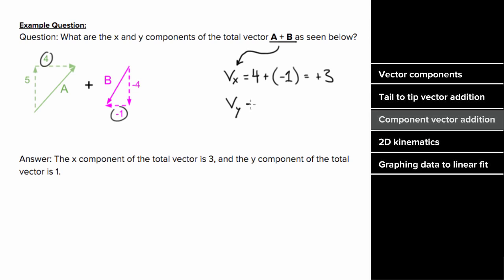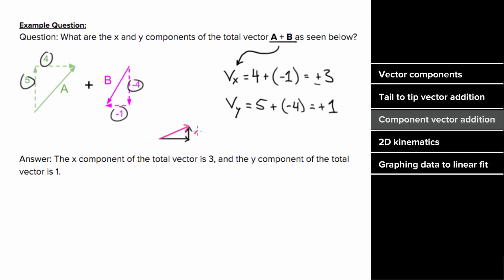For the vertical component, add the component of a plus the component of b: five plus negative four gives positive one. Since the horizontal component of the total vector is positive, it points to the right three units. Since the vertical component is positive, it points up one unit. That means the total vector a plus b points up and to the right — one unit up and three units to the right.